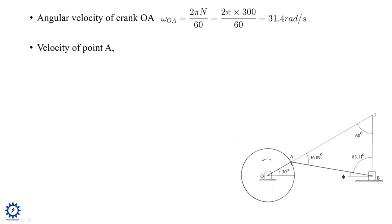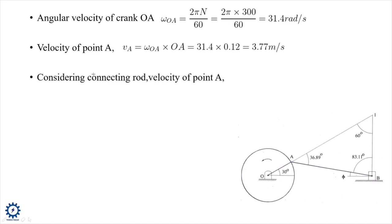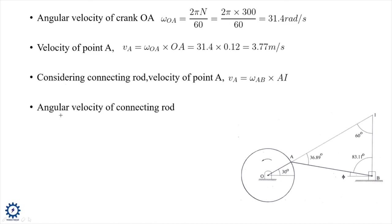Velocity of point A: va = omega_OA × OA = 31.4 × 0.12 = 3.77 m/s. Considering the connecting rod AB, point A is common to both crank and connecting rod. So va = omega_AB × AI, giving omega_AB = va/AI = 3.77/0.5732 = 6.58 rad/s.